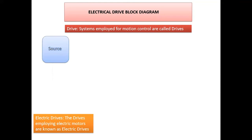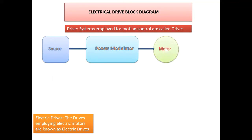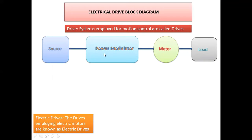Now observe the block diagram. The parts of the electrical drive block diagram are: source or supply, connected to the power modulator, which is connected to the motor, and the motor is connected to the load. The device controls the motor speed, and that motor speed controls the load — for example, the speed of a turbine is controlled by the motor. These four parts form the power circuit of the electrical drive.